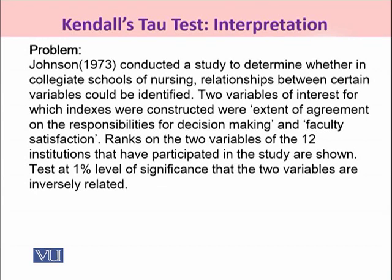Now, the problem at hand — that was a study conducted by Johnson in 1973, and he was interested in finding out the relationship between two variables relating to the College of Education School of Nursing. One was the extent of agreement for decision making and the other was faculty satisfaction. The ranks on the two variables were assigned for the 12 institutions that participated in the study. We were interested in testing, at 1% level of significance, that the two variables are inversely related to each other.